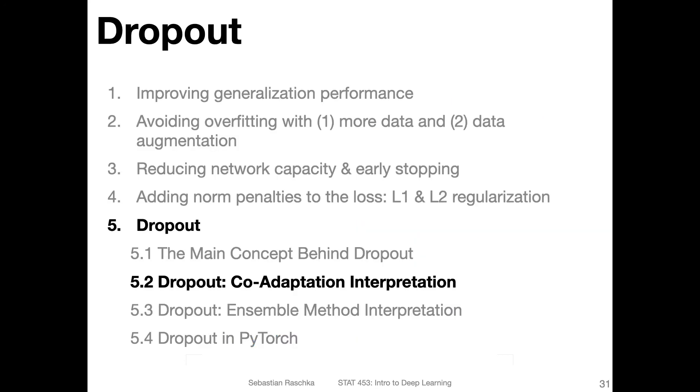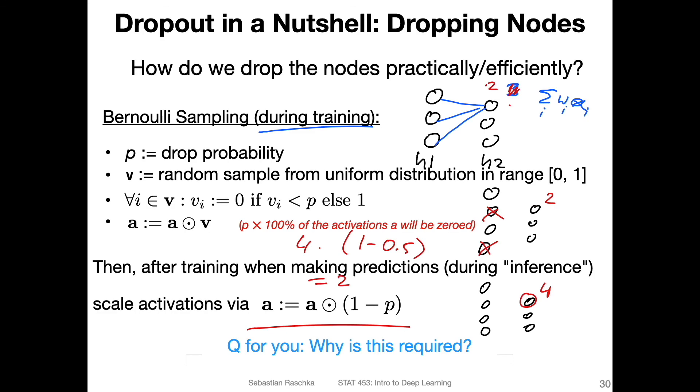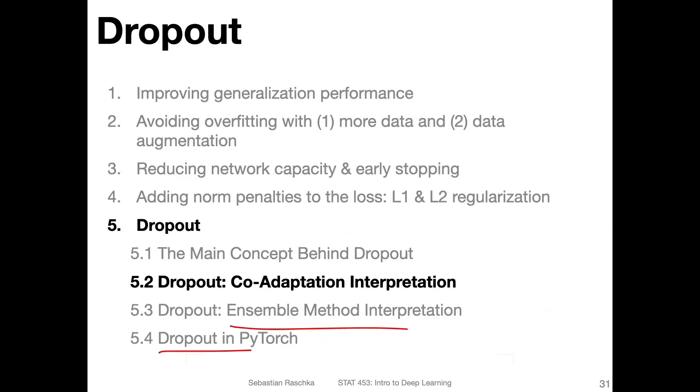In the next video, I want to talk about the co-adaptation interpretation—one way to interpret why dropout might work in practice. Then there's an alternative interpretation looking at dropout as an ensemble method. Then I'll show you how we can do dropout in PyTorch. There's also a concept called inverted dropout, which will be interesting. It's a slight modification of what I just talked about.